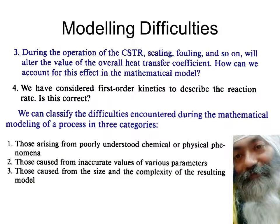The three categories are: number one, those arising from poorly understood chemical or physical phenomena; number two, those caused by inaccurately known parameters — parameters not exactly known or not constant, changing with temperature, concentration, or deteriorating over time; and number three, those arising from the size and complexity of the model, which we will illustrate with a binary distillation column example.